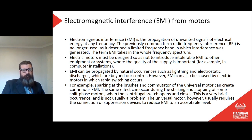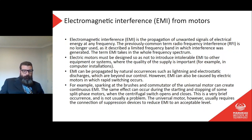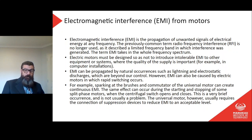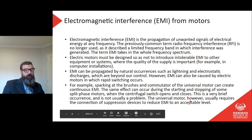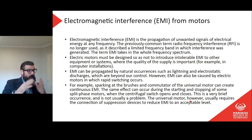Electromagnetic interference from motors: EMI is the propagation of unwanted signals of electrical energy at any frequency. Electric motors must be designed so as not to introduce intolerable EMI to other equipment or systems where supply quality is important, for example computer installations. EMI can be propagated by natural occurrences such as lightning and electrostatic discharges, but it can also be caused by electric motors where rapid switching occurs. Sparking at the brushes and commutator of the universal motor can create continuous EMI. The same effect can occur during the starting and stopping of some split phase motors when the centrifugal switch opens or closes, but that's brief and not usually a problem. The universal motor usually requires suppression devices to reduce EMI, because the brush and commutator switch the polarity of the incoming AC supply approximately 50 times a second.